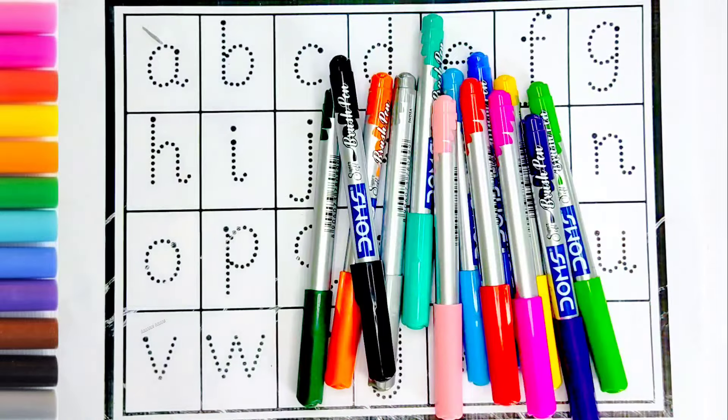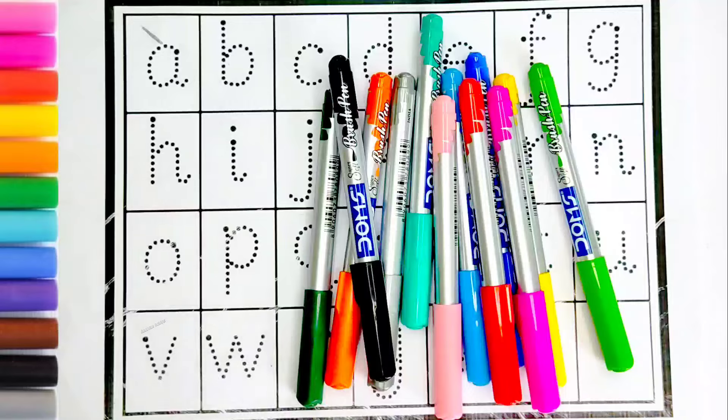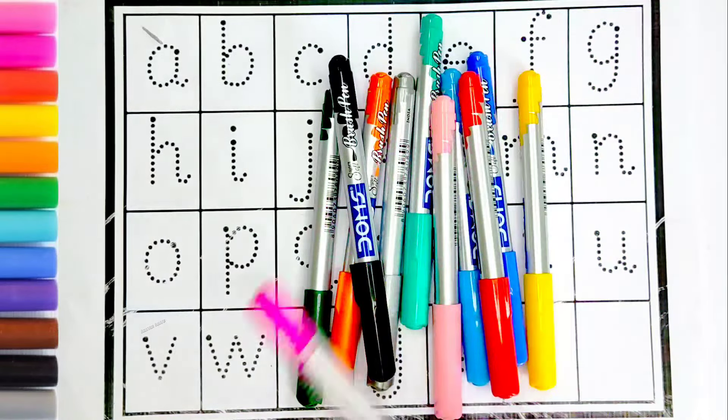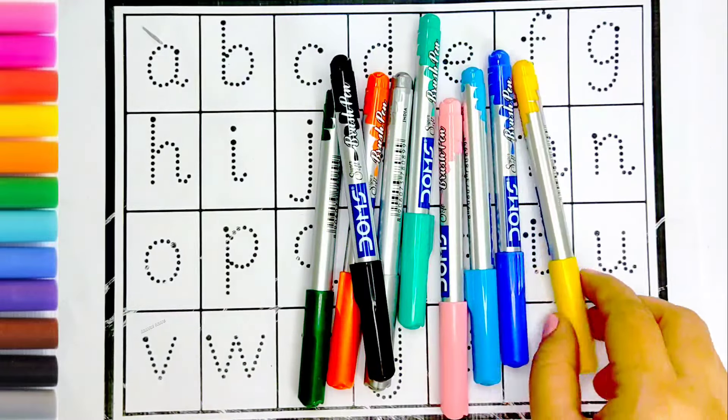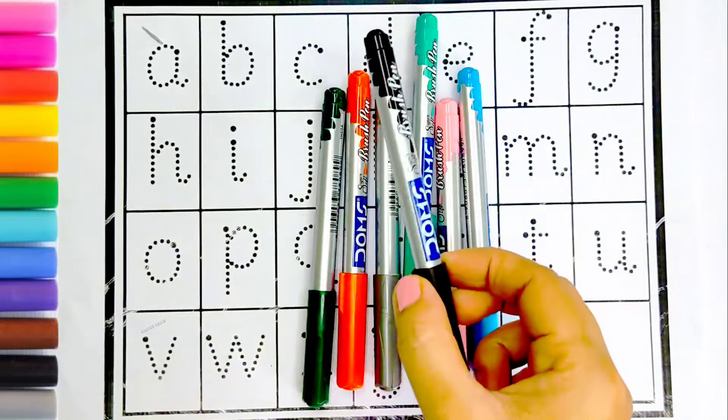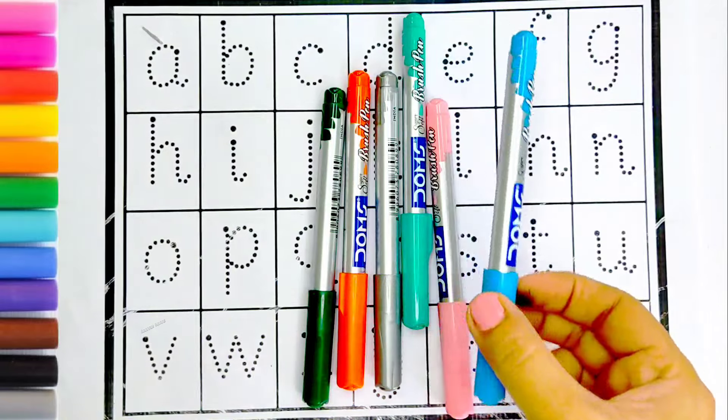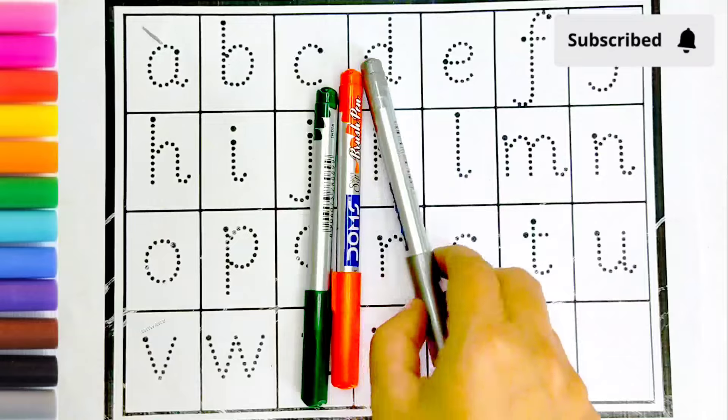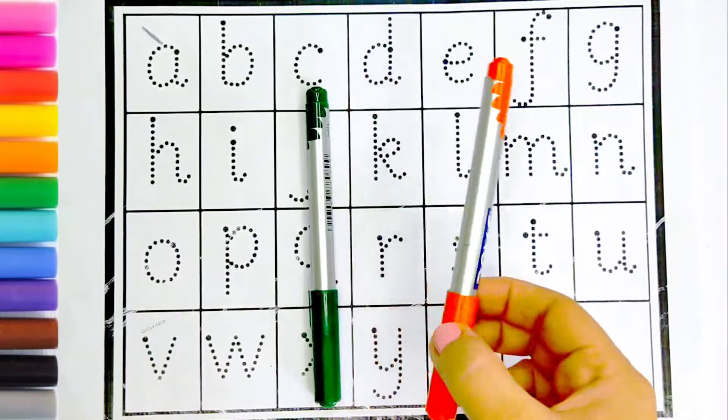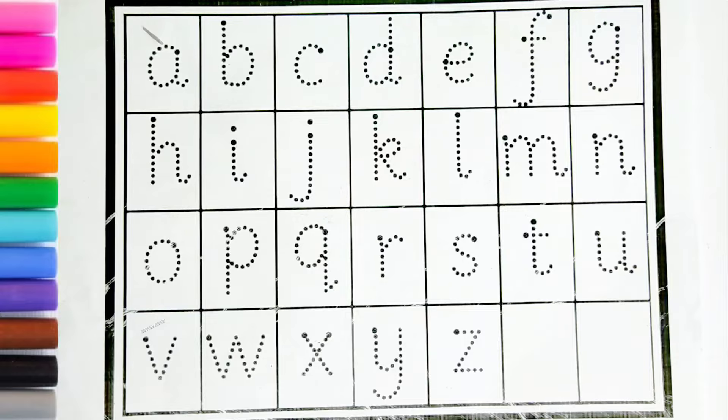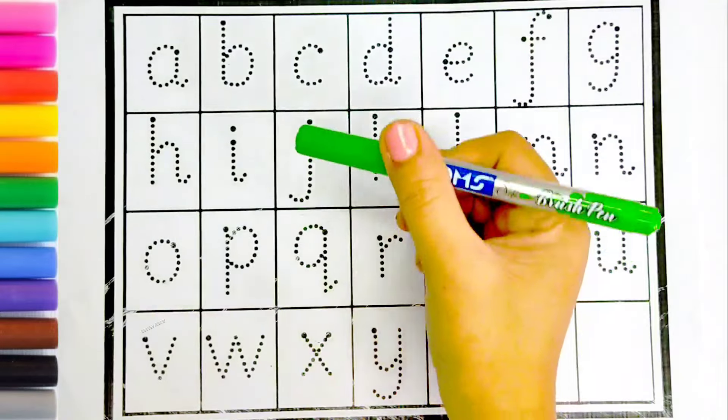Hello kids, today we will learn A to Z and color names. Purple color, light green color, pink color, red color, yellow color, blue color, black color, sky blue color, pink color, sea green color, gray color, orange color, dark green color, light green color.